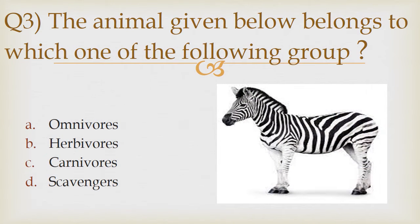Question number 3. The animal given below belongs to which one of the following groups? Option A: Omnivores. Option B: Herbivores. Option C: Carnivores. Option D: Scavengers. The correct answer is Option B — Herbivores.